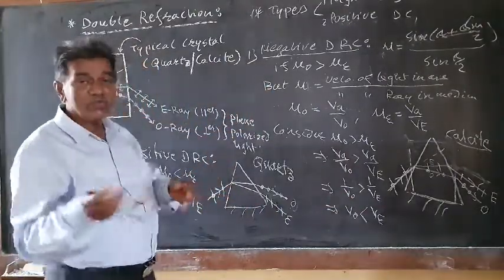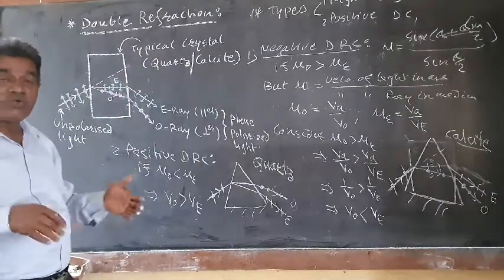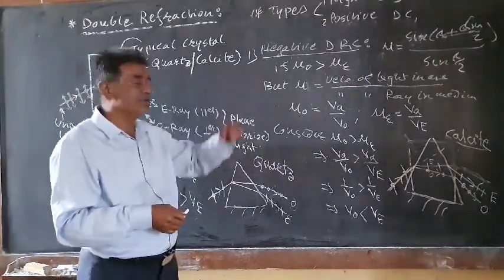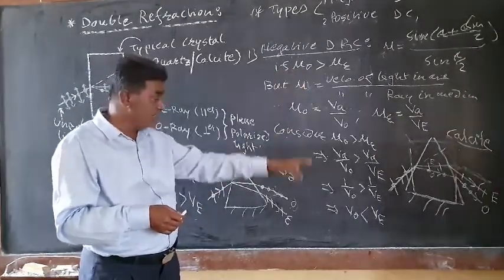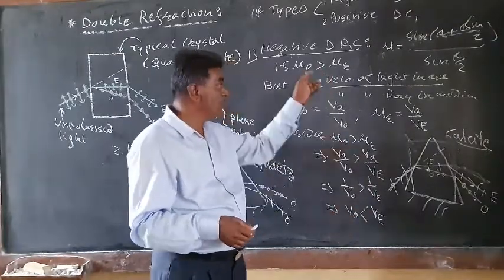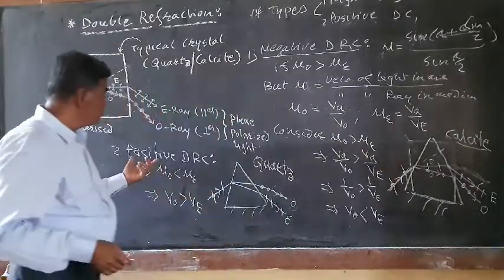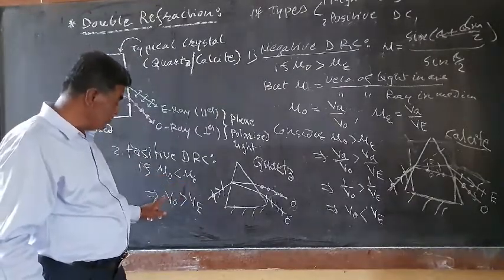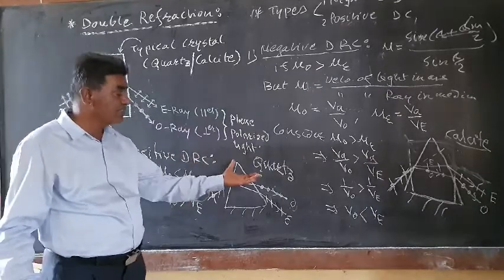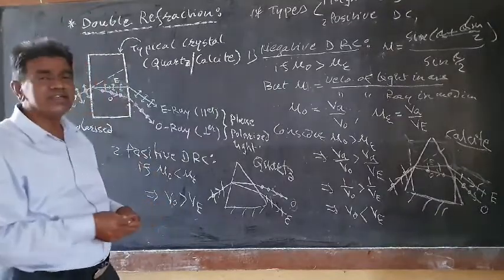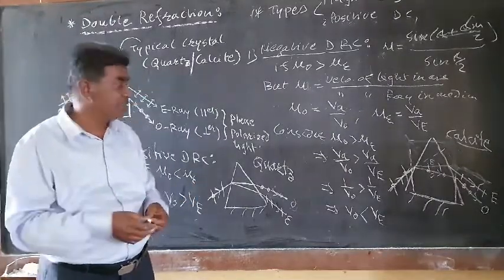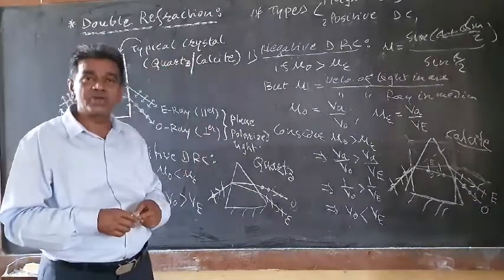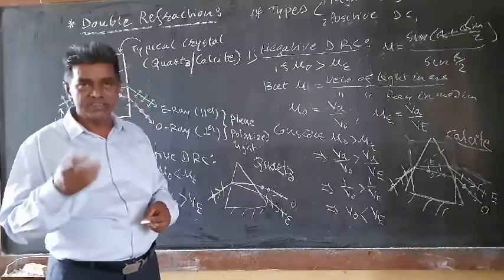To summarize: we have seen what double reflection is and its six properties. There are two types of double refracting crystals — negative and positive. For negative crystals, μ_O > μ_E, meaning V_O < V_E, with calcite as an example. For positive crystals, μ_E > μ_O, meaning V_O > V_E, with quartz as an example. In the next lecture, we will explain how double reflection actually occurs. Thank you.